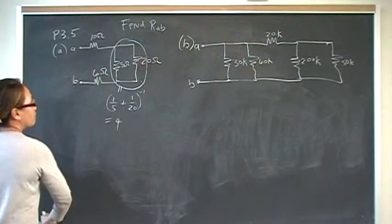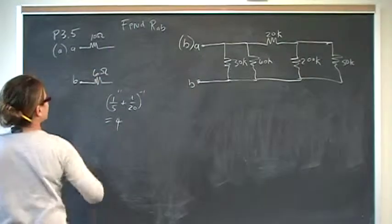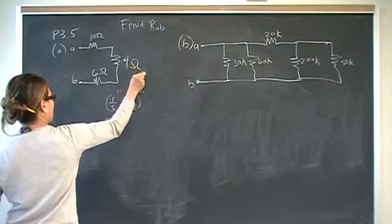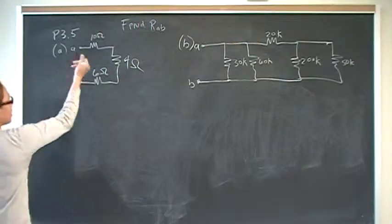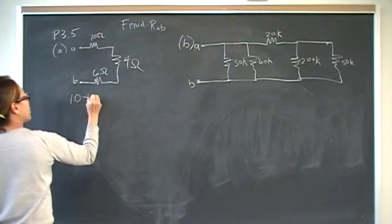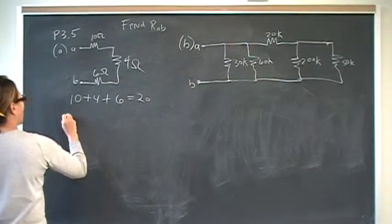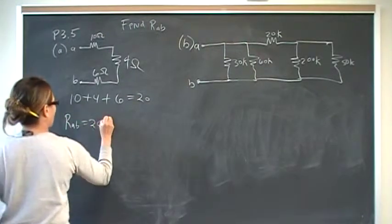So you redraw the circuit and replace that with a 4. And once you do that, you have 10 in series with 4, in series with 6, and that is 20. So RAB is 20 ohms.